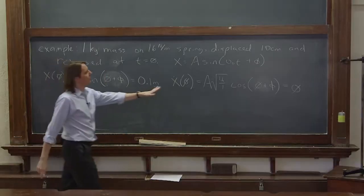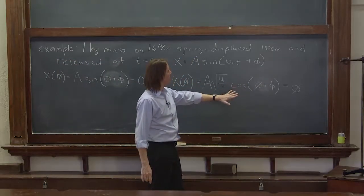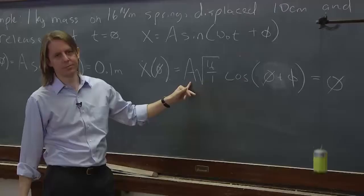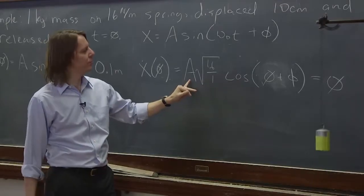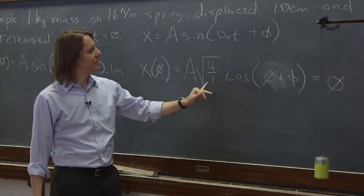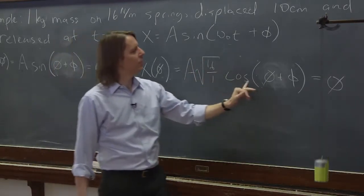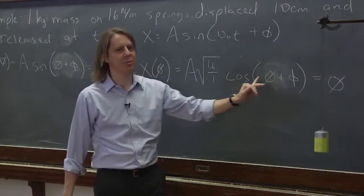This one also has two terms in it, but you can do something with because it's equal to zero. So is A zero? No. A can be zero, but that's a trivial solution. Is 16 over 1 squared zero? No, that's four.